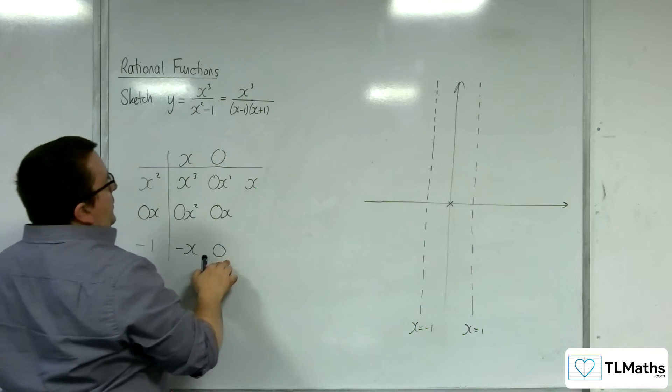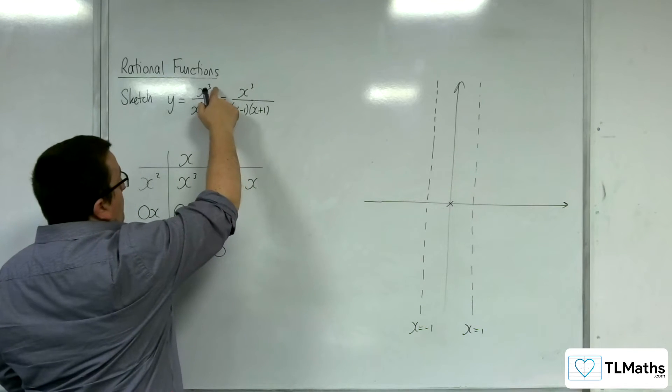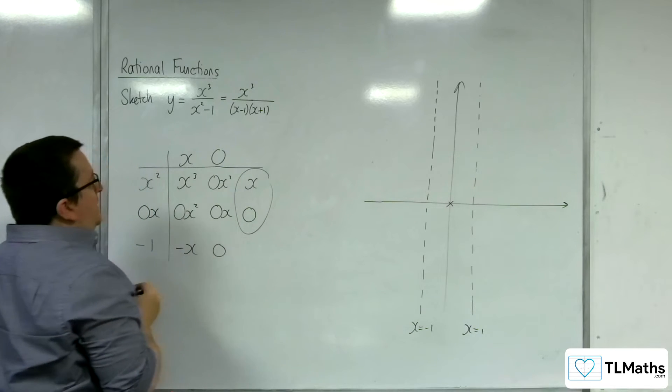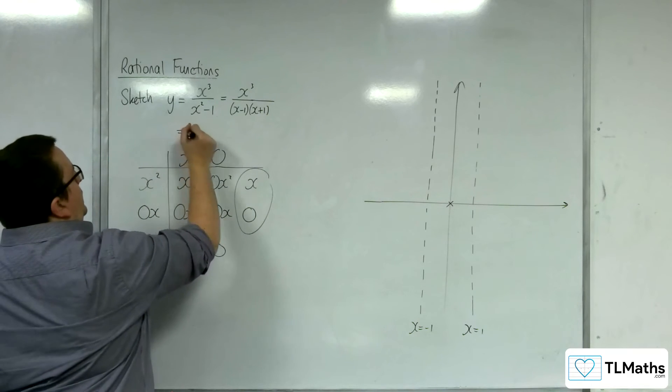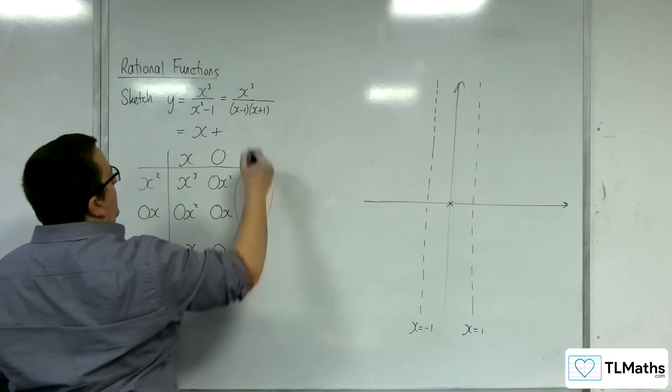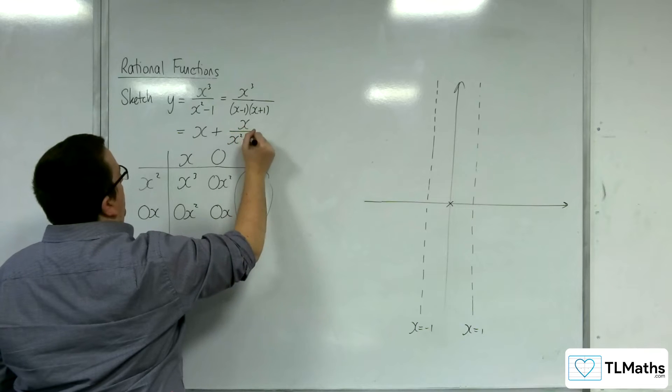I want +0 here, so I've got 0 there already, and so that's going to be 0. So this is my remainder, and so this equals x + x/(x² - 1).